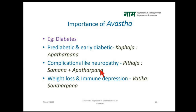Next is the importance of Avastha, or the stage of disease. Take diabetes as an example — it can be divided into three stages: pre-diabetic and early diabetes, then complications like neuropathy, and third, weight loss and immune depression. The first stage is predominant of Kapha Dosha, the second of Pitta Dosha, and the third of Vata Dosha. The Avastha can be different even in a single disease, and the treatment may differ accordingly.